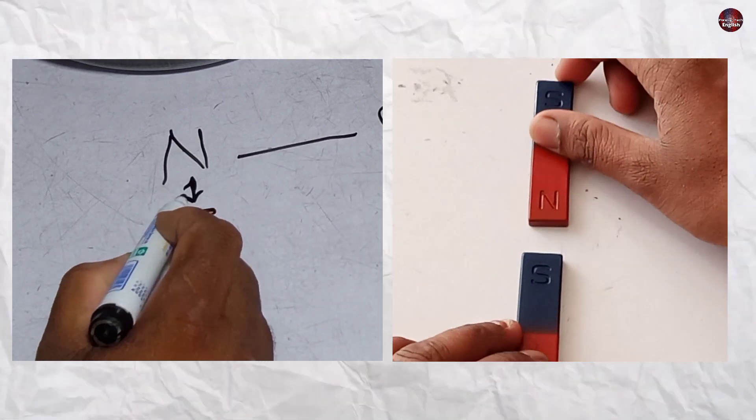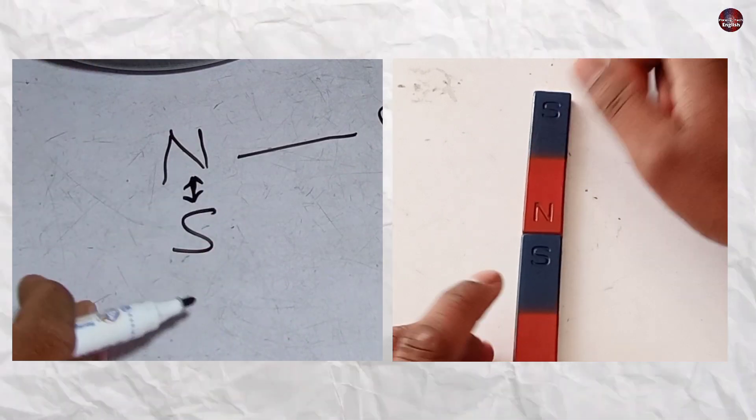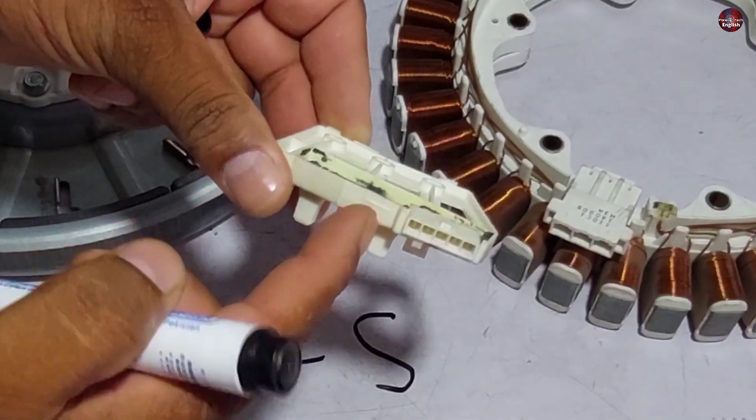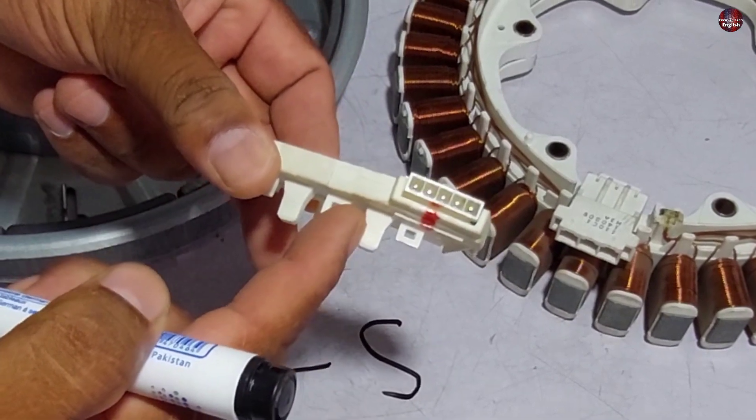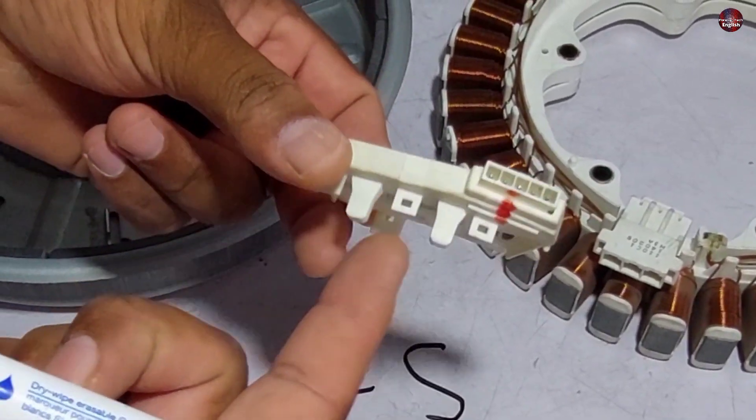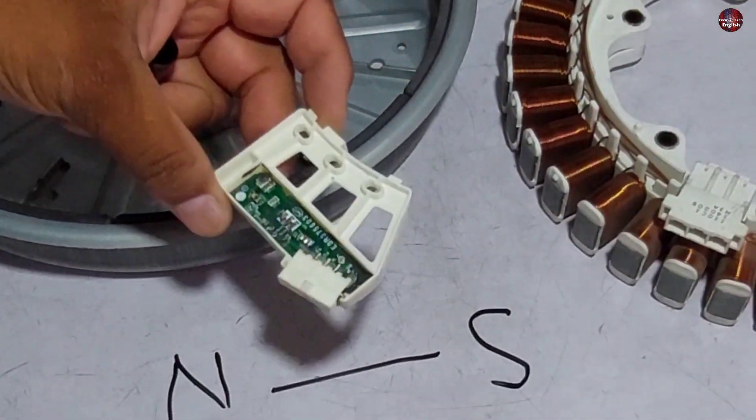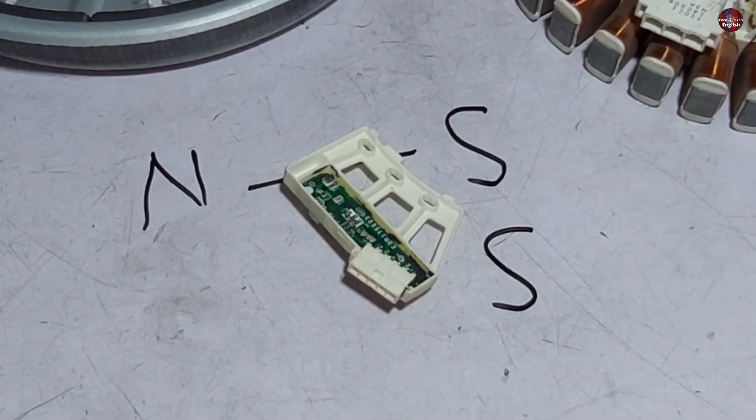And due to this, the motor works, otherwise it will not. Now let me make you understand how the effect of the north and south pole takes place on this hall sensor. Before that, let me tell you how many types of hall sensors there are.